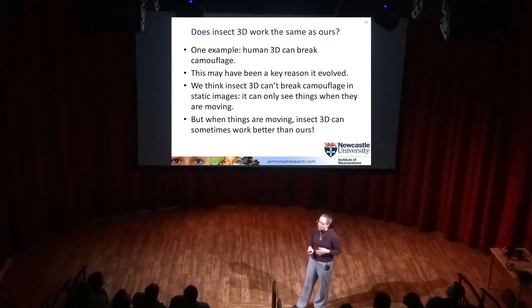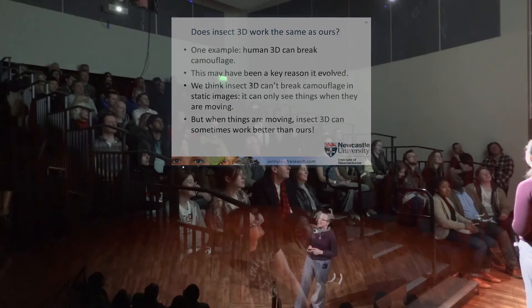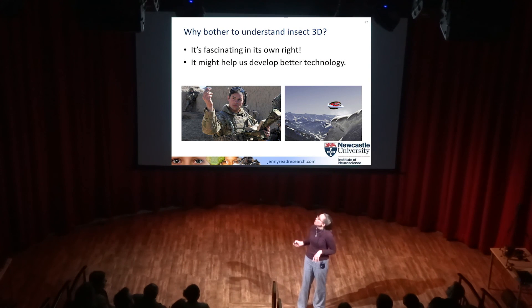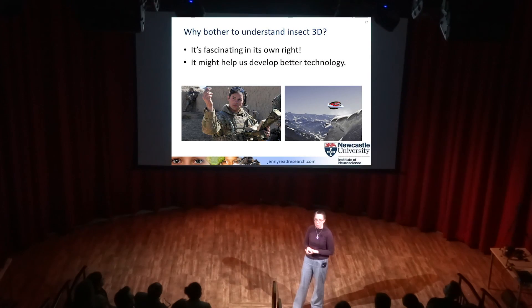It's not that one system is better or worse - they're optimized for different niches. Studying insect vision, fascinating in its own right, could have practical spin-offs. Computer algorithms for 3D vision are mainly based on human 3D - complicated, elaborate, able to break camouflage, which is great for some applications. But increasingly, lightweight autonomous drones are becoming important - used in Afghanistan by British soldiers, or prototypes designed to find avalanche victims. For such applications you might want quick-and-dirty 3D that doesn't work so well but does the job, at low cost on a low-power system. That's exactly what insects give us. Those are some highlights of our work on insect 3D vision - I'll be delighted to answer questions over lunch. Thank you.